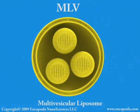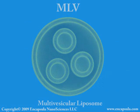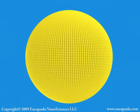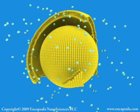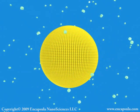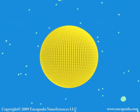LUVs, or large unilamellar vesicles, range from 70 to 120 nanometers in diameter.